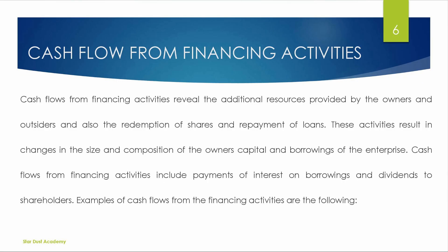Now we will start investing activities. Next, we will cover cash flow from financing activities. Cash flow from financing activities reveals the additional resources provided by owners and outsiders, and also the redemption of shares and repayment of loans. These activities result in changes in the size and composition of owners' capital and borrowings. This includes preference shares, equity shares, debentures, and loans and borrowings.